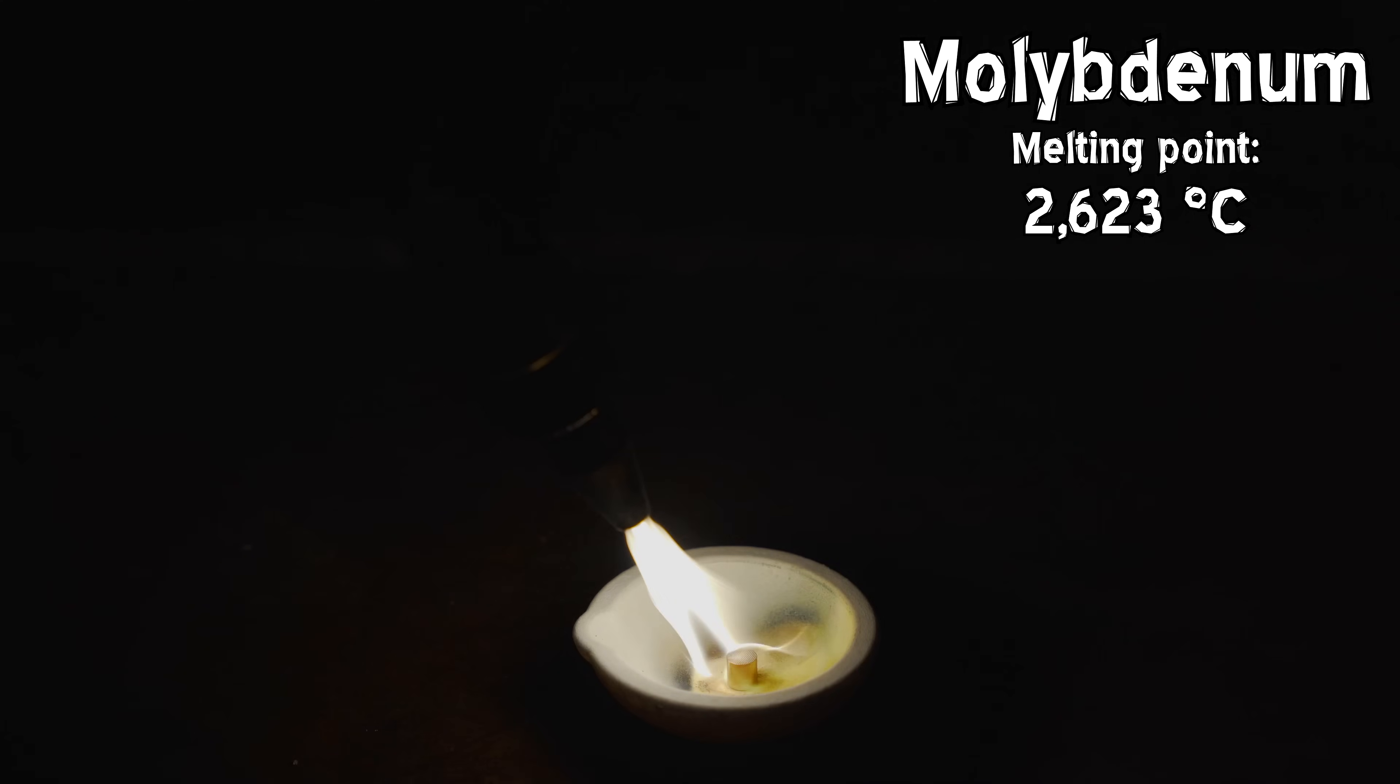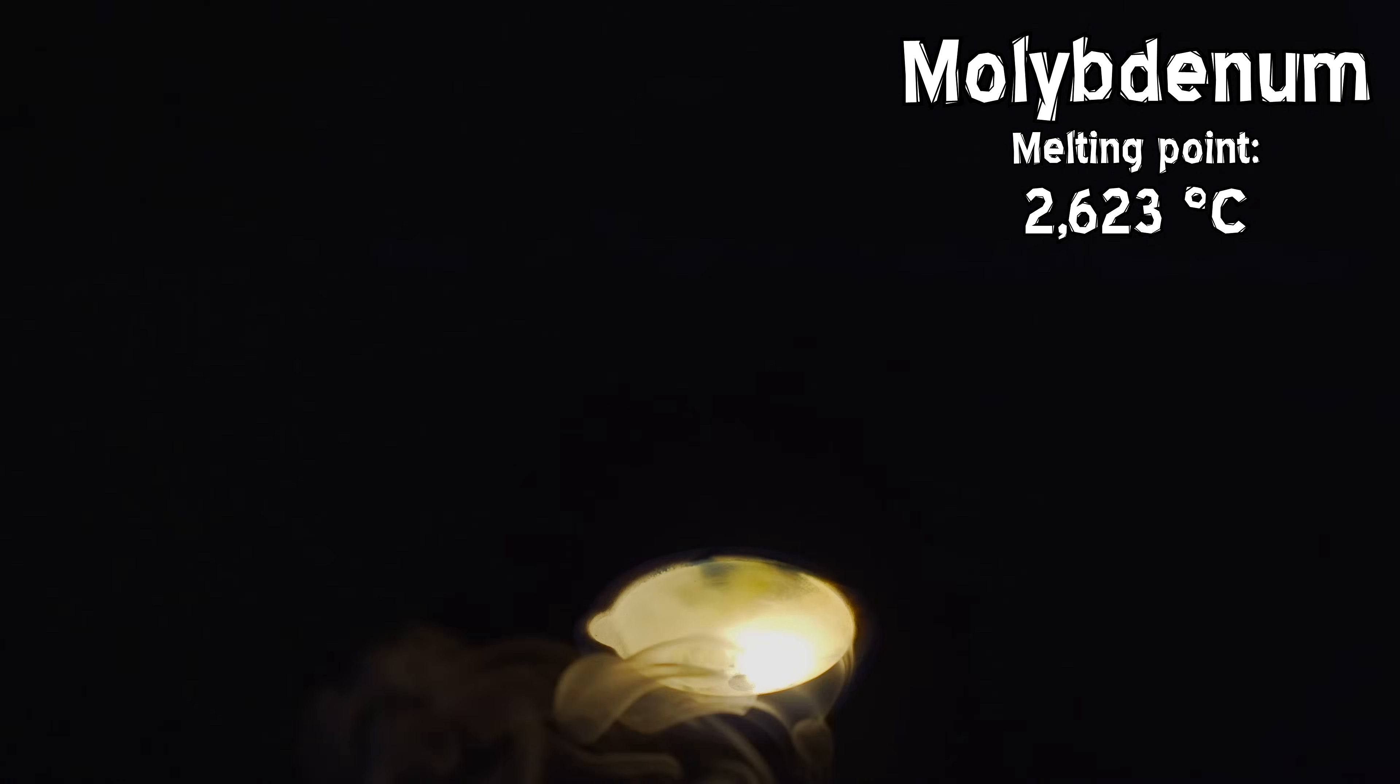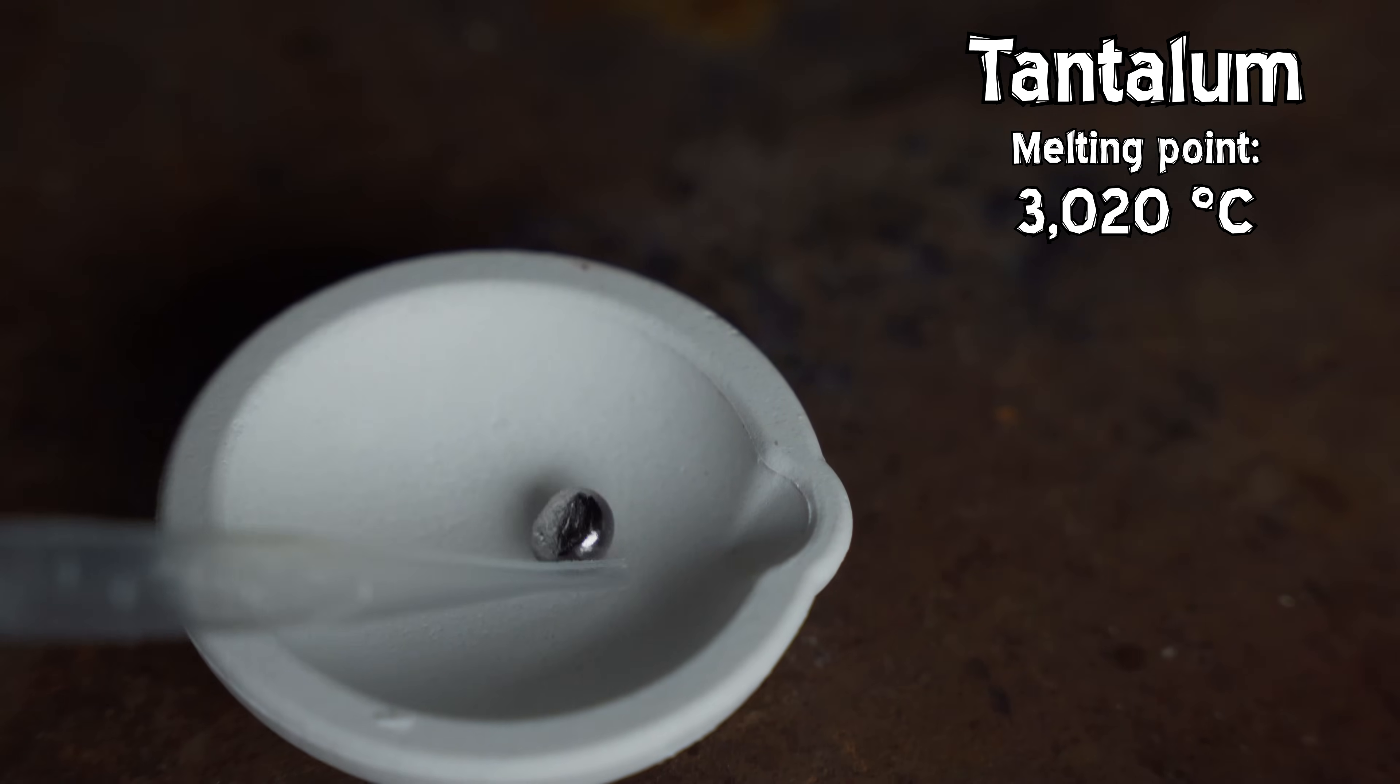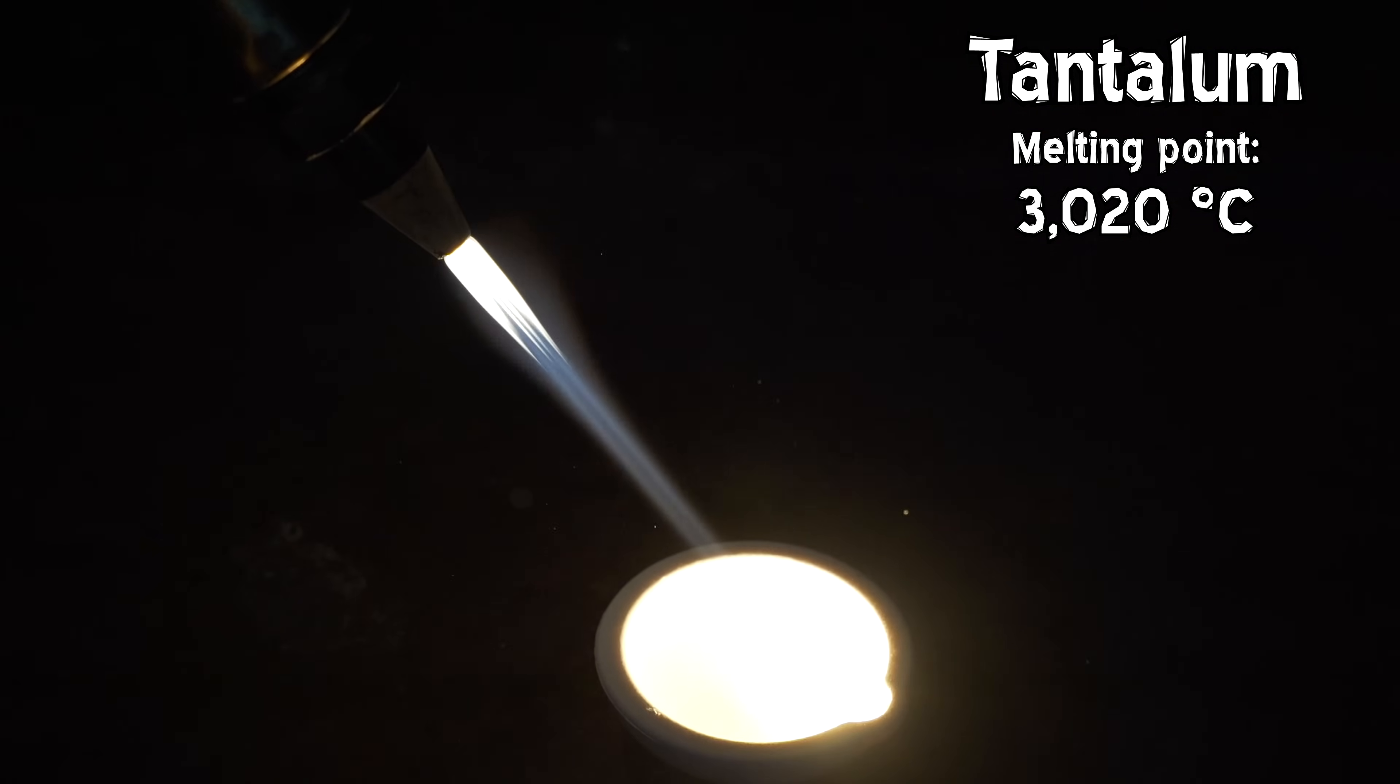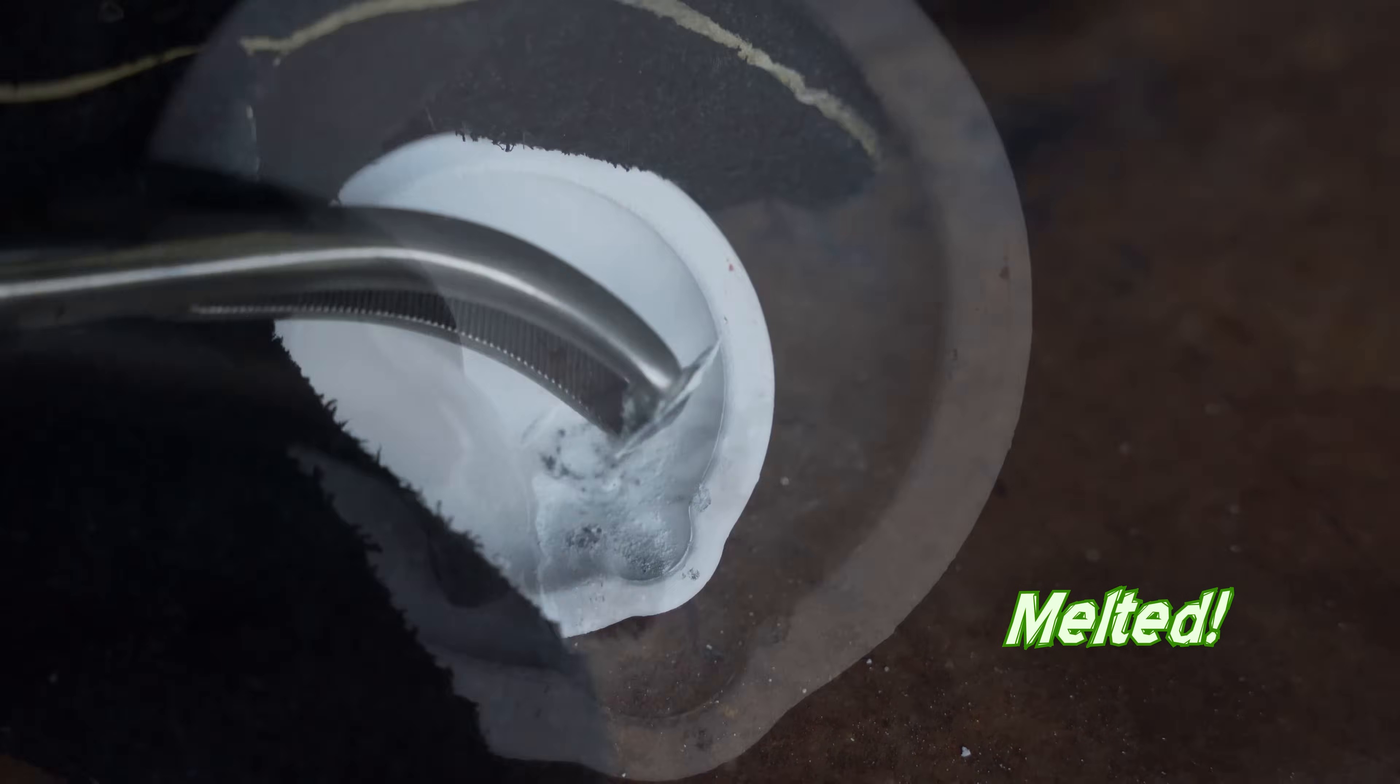So the first metal we have here is molybdenum, which melts at 2620 degrees, and we pretty easily melted it. I mean, we're obviously going to oxidize these metals here because we're throwing oxygen at them at thousands of degrees. So they're going to do some weird chemistry here. But you can see we've definitely melted the molybdenum. And the next metal we have here is tantalum, which has a melting point of pretty much exactly 3000 degrees. So if we can melt that, we've managed to get a flame temperature of over 3000 degrees. And once again, even though the metal is not very reactive, we did oxidize it a little and we did manage to melt it as well. So our flame temperature is above 3000 degrees.